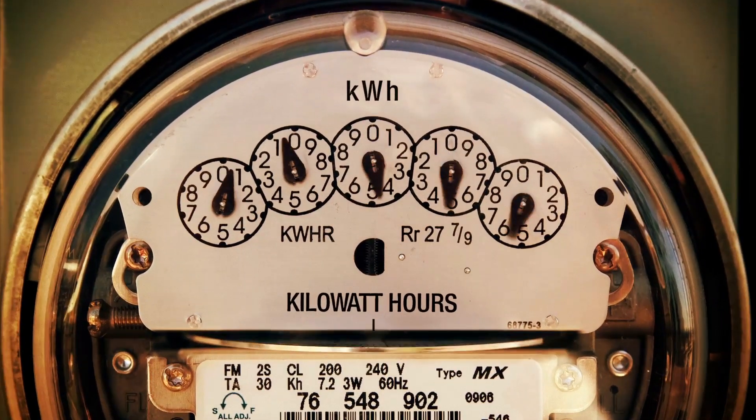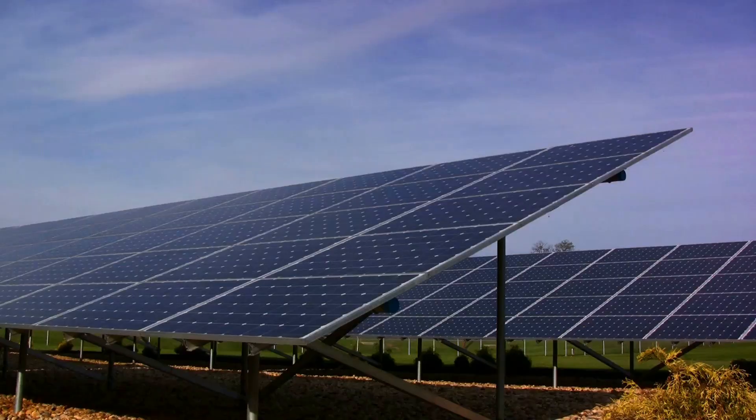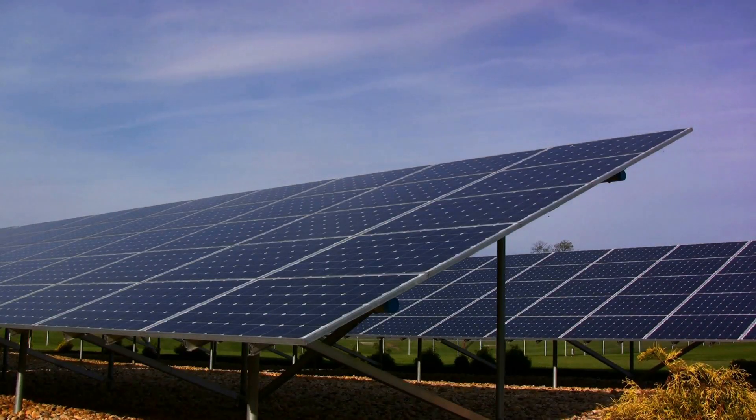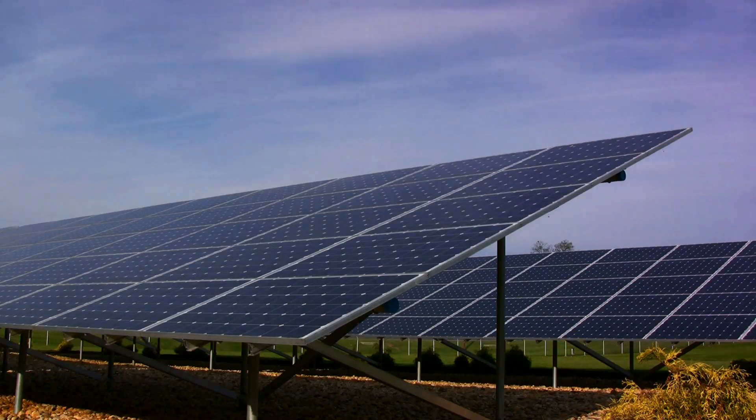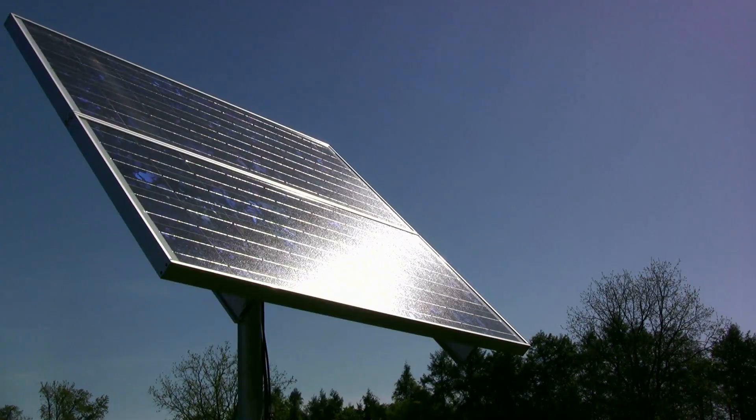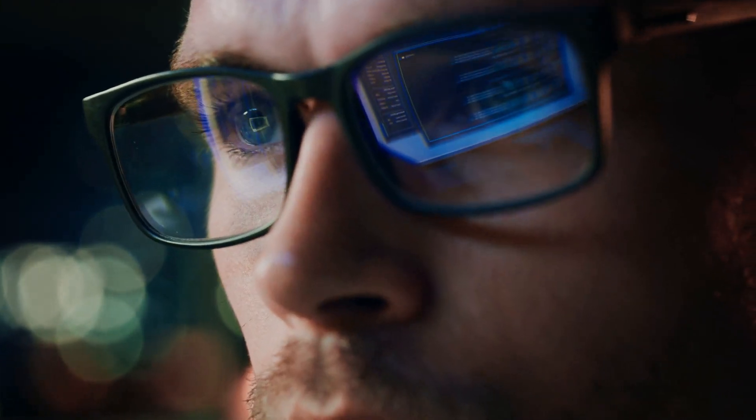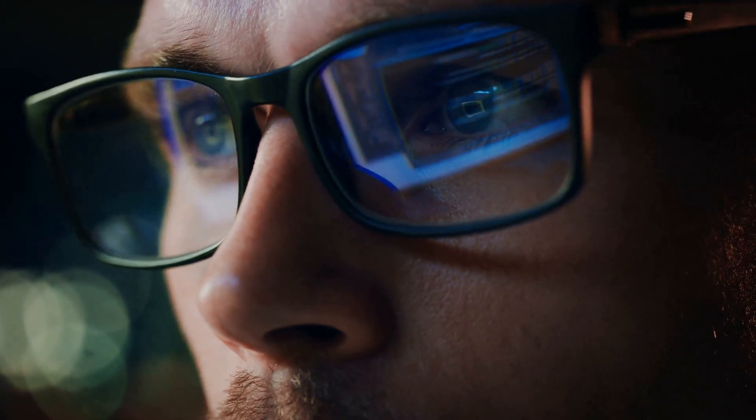Your electric meter, which usually spins in one direction recording the energy you consume, begins to spin in the opposite direction when you're generating more power than you're using. This process is what we call net metering. It's essentially recording the net amount of energy you've consumed after offsetting the energy you've produced.